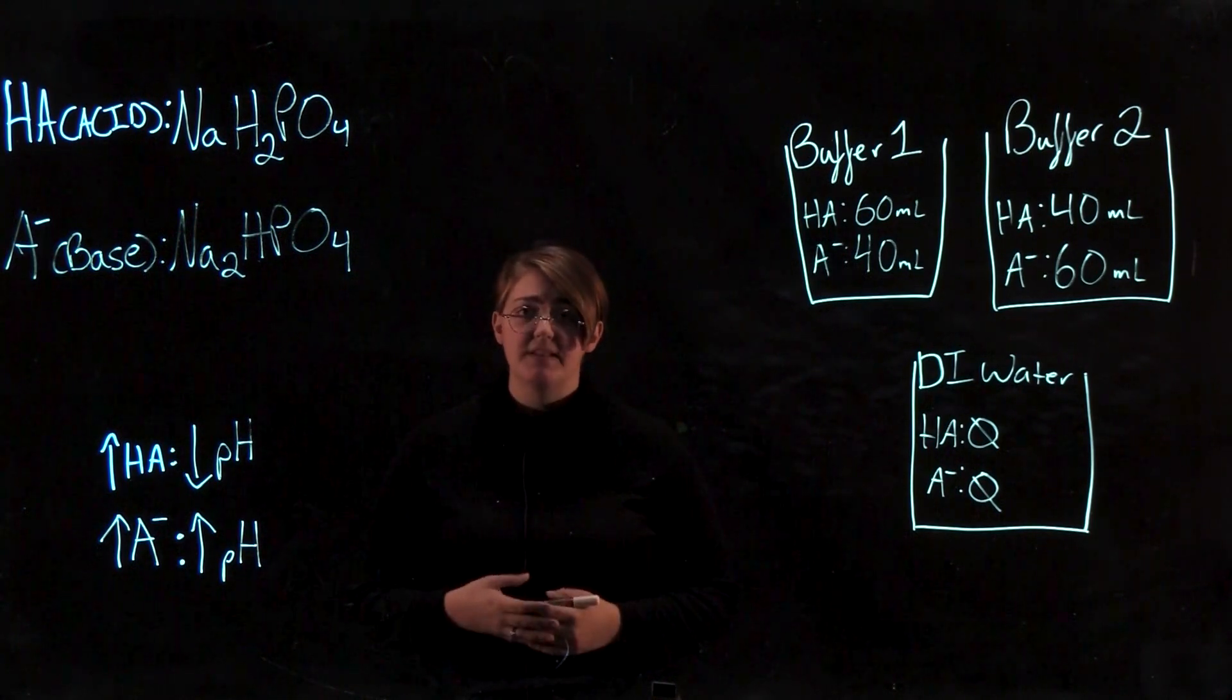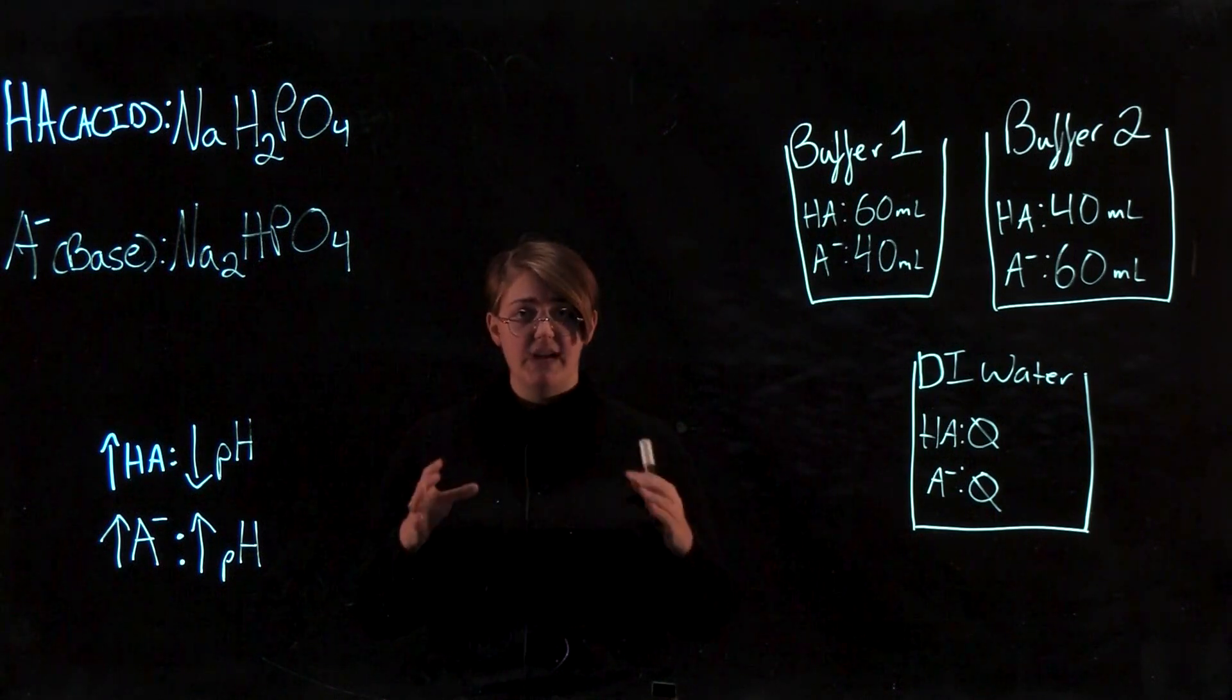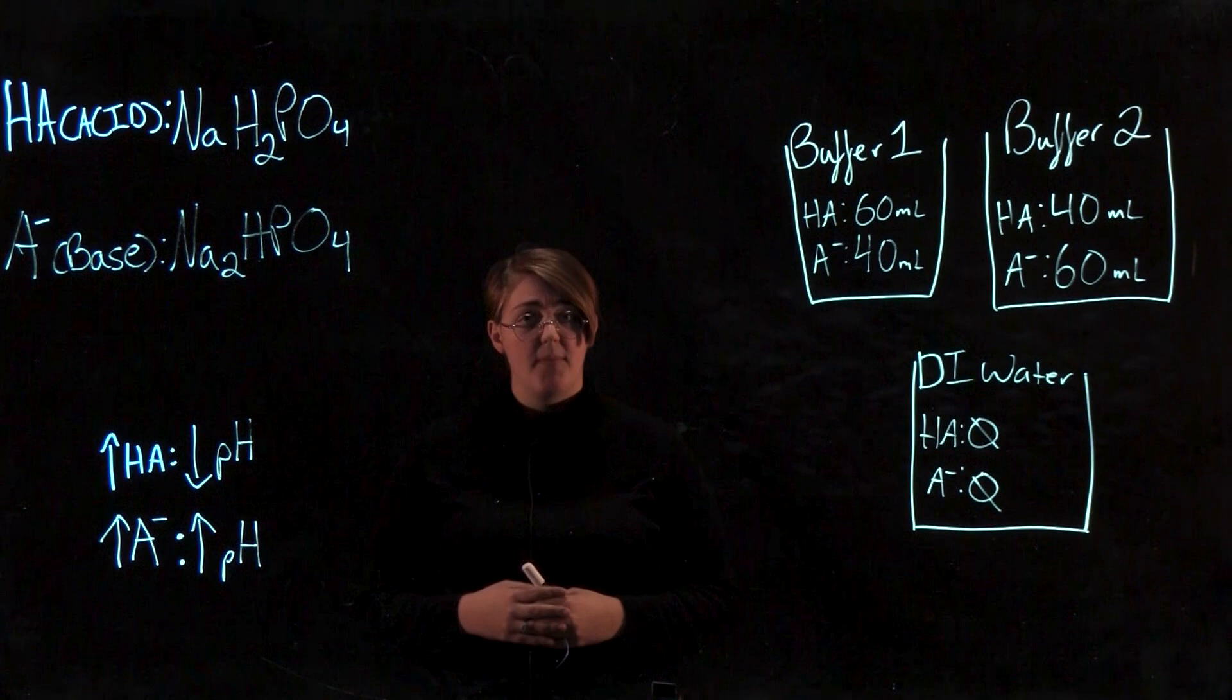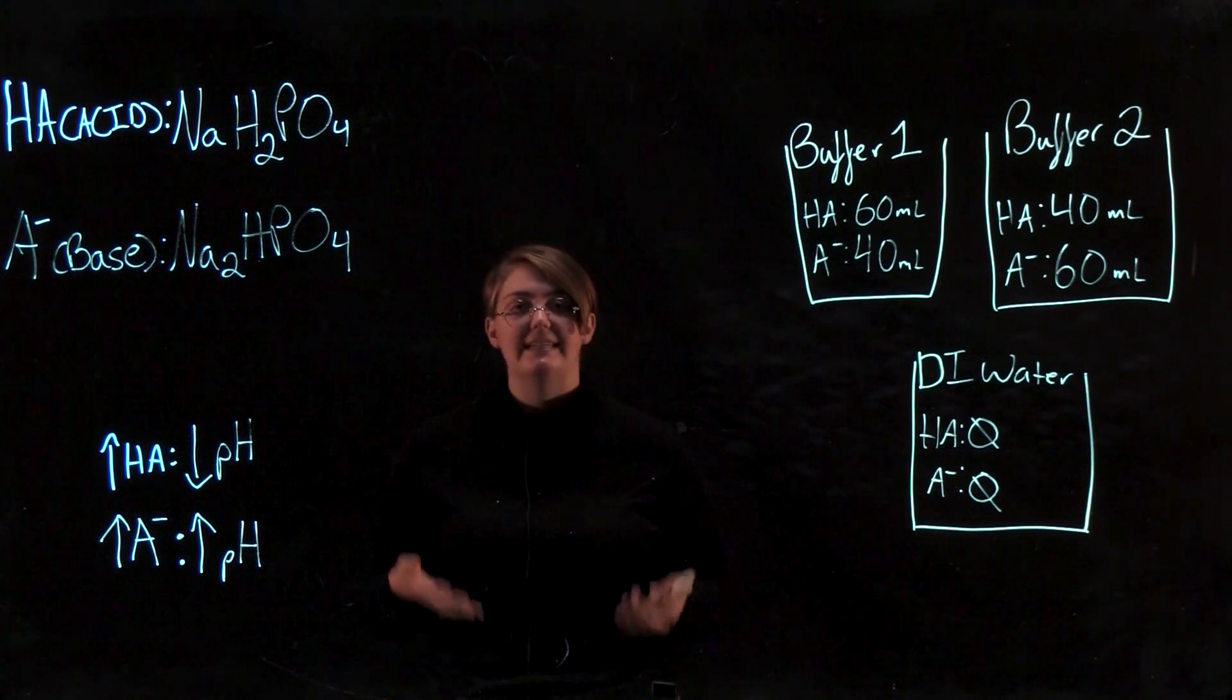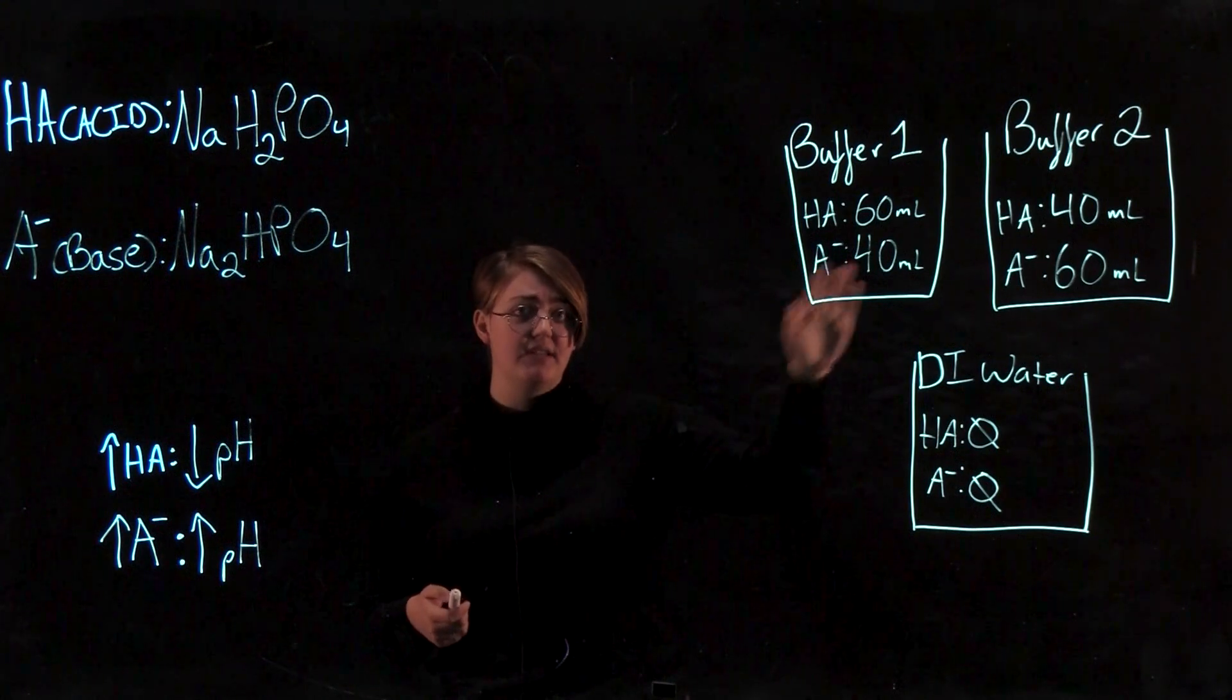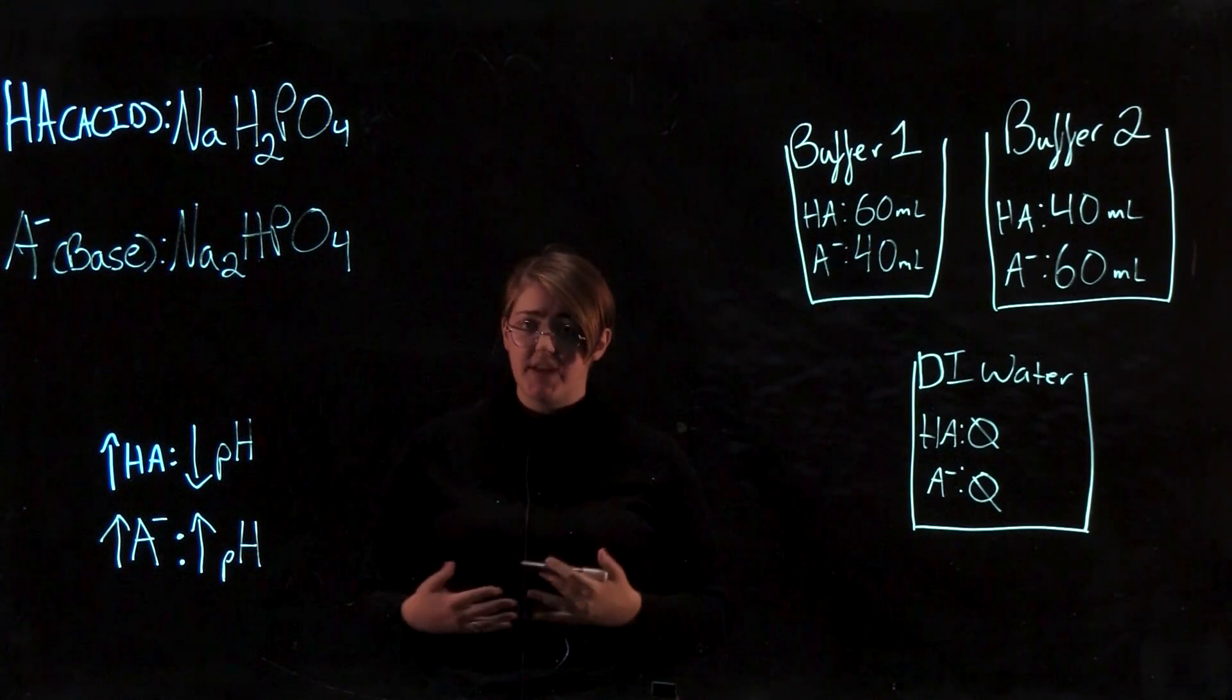Question 2 is asking you to compare between your buffers 1, 2 and your DI water, the pH changes when you added carbonic acid to the solution. Carbonic acid, as in the name, is an acid. Hopefully you look back at your data and you'll see that there should have been a pH change between the three of them.